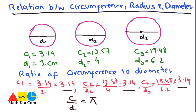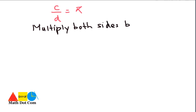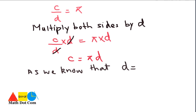So we have the expression C over D equals pi — this is a very important expression. Using the rule that if we multiply both sides by D, the D cancels on the left, giving us C equals pi times D. This expression shows the relationship between circumference and diameter. Since the diameter is two times the radius, we can substitute d equals 2r into this equation.